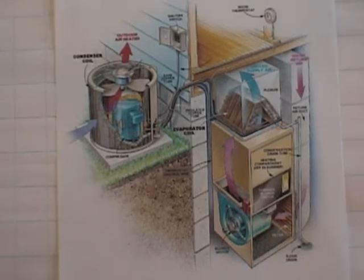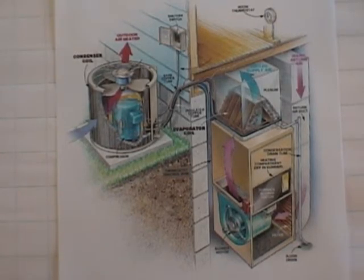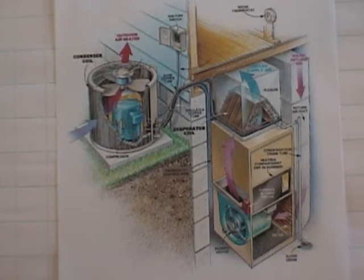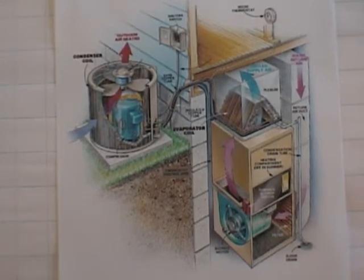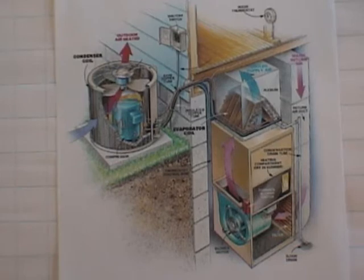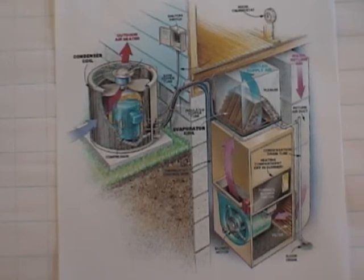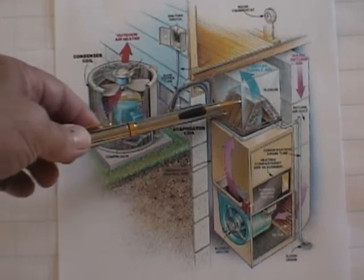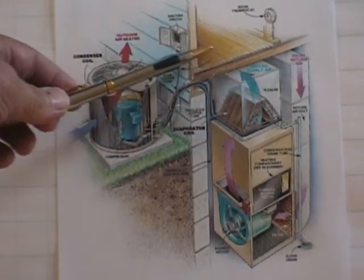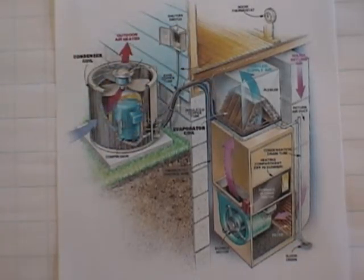In order to measure the total heat across the evaporator coil, we need to take a dry bulb and wet bulb temperature with our humidity stick in the return air or mixed air stream, and also in the supply air stream. We want to place the humidity stick in the supply air stream out of sight of the evaporator coil if possible, at least two feet away from the coil to get a good average temperature. Anywhere too close to the coil would not be a good location, so we need to get downstream and preferably out of sight.